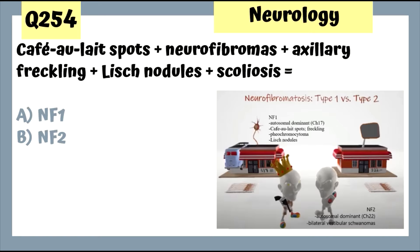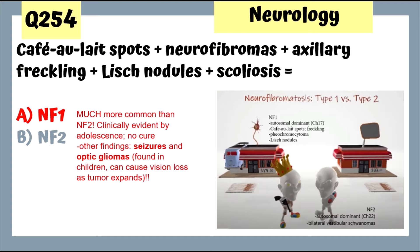Question 254: Café au lait spots, neurofibromas, axillary freckling, Lisch nodules, and scoliosis are associated with neurofibromatosis type 1, which is much more common than type 2. Other findings in NF1 include seizures and optic gliomas, as opposed to NF2 where we see bilateral vestibular schwannomas.